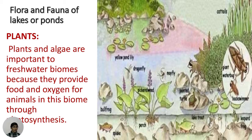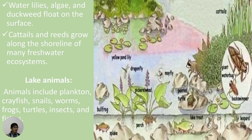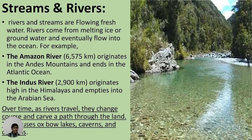Flora and fauna of lakes: Plants and algae are important to freshwater biomes because they provide oxygen and food for animals through photosynthesis. Water lilies, algae, and duckweed float on the surface. Cat tails and reeds grow along the shoreline. Lake animals include pelicans, crayfish, snails, worms, frogs, turtles, insects, and many fishes.